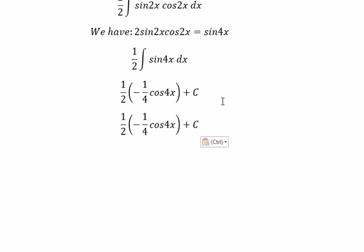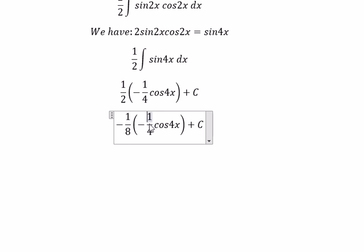Next, negative 1 over 4 multiplied with 1 over 2. You got about negative 1 over 8. And that is the final answer.